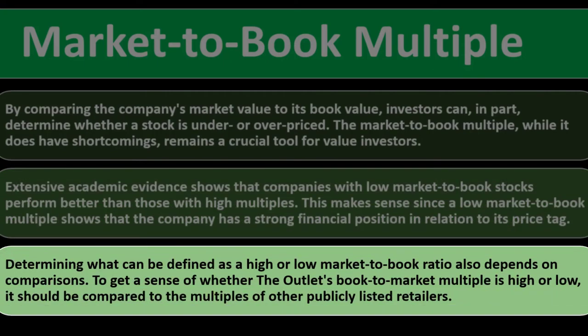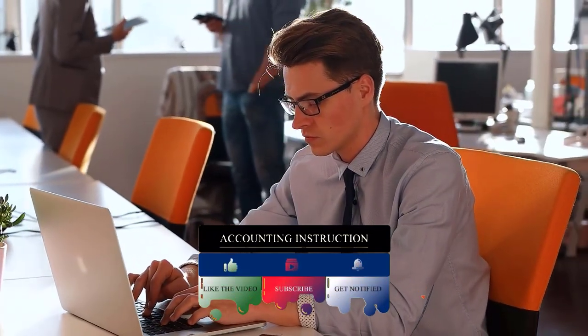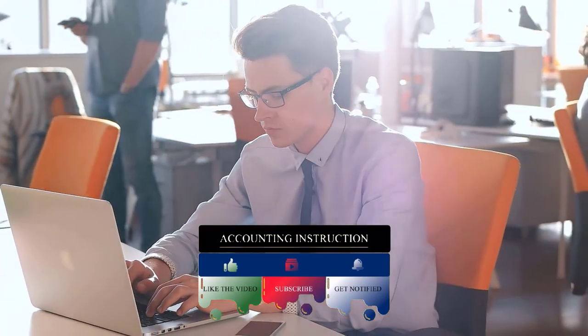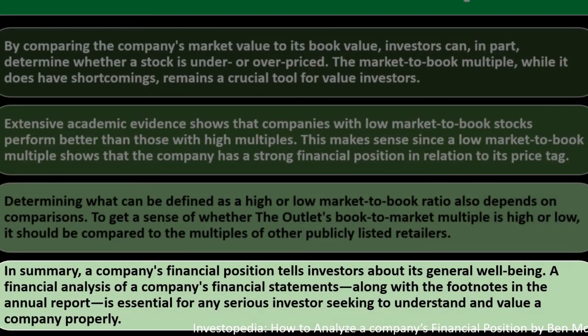Determining whether a market-to-book ratio is high or low depends on comparisons within the same industry. To get a sense of whether The Outlet's book-to-market multiple is high or low, it should be compared to the multiples of other publicly listed retailers in the same sector. In summary, a company's financial position tells investors about its general wellbeing, and a thorough financial analysis of financial statements and annual report footnotes is essential for any serious investor seeking to properly understand and value a company.